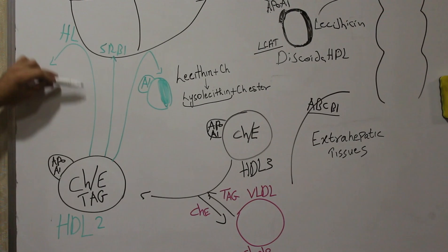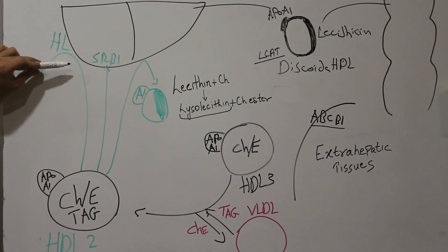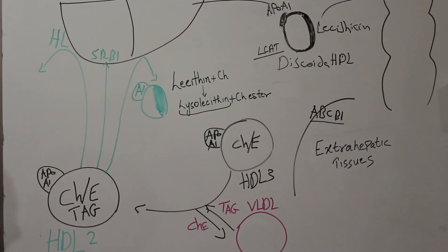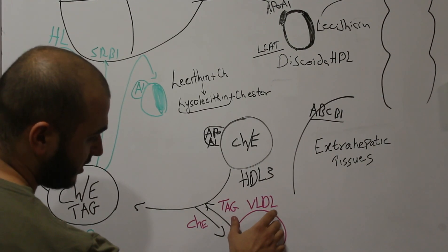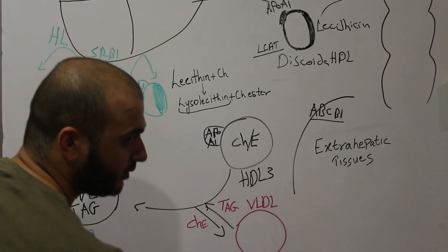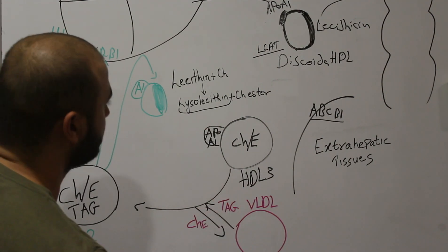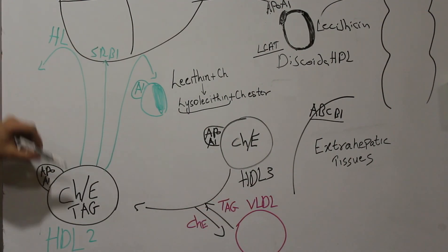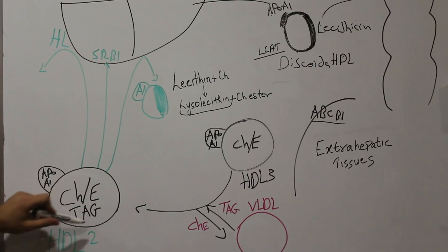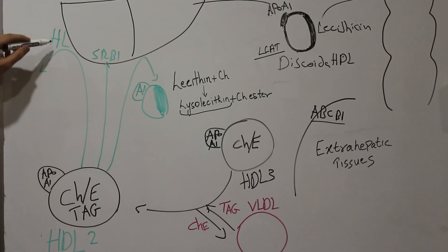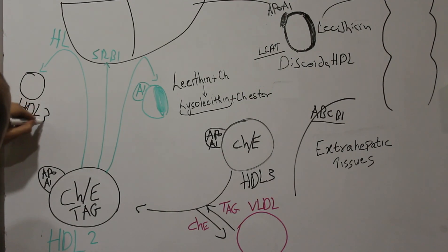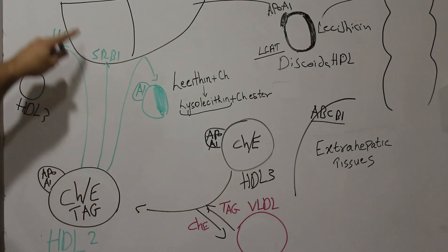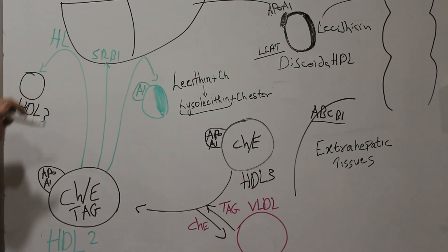The first pathway is that HDL2 may meet the hepatic lipase enzyme in the liver — the same hepatic lipase that hydrolyzes the VLDL remnant, which is intermediate density lipoprotein. It will hydrolyze all triacylglycerides in the HDL2 form, and then HDL will turn back into HDL3, which may continue in this repeating cycle.